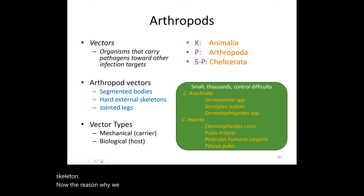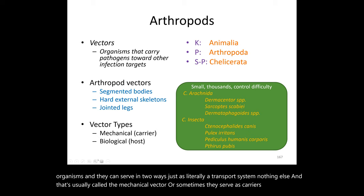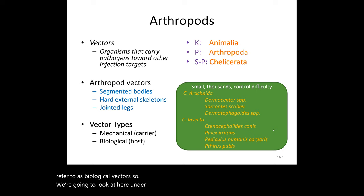Arthropods can serve as vectors in two ways: they can serve as a purely mechanical transport system — called a mechanical vector — or they can serve as carriers that feed, grow, and do other things for the pathogens, in which case they're referred to as biological vectors. Under phylum Arthropoda, the two classes we're interested in are Arachnida and Insecta.